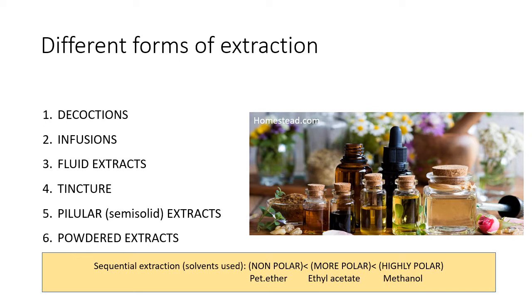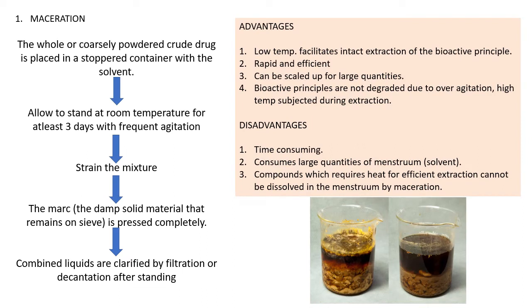The different forms of extracts include decoctions, infusions, fluid extracts, tinctures, peculiar extracts such as solid and semi-solid extracts, and powder extracts. For sequential extraction using a combination of solvents, you start with a non-polar solvent like petroleum ether, then a more polar solvent like ethyl acetate, and finally a highly polar solvent like methanol — progressively increasing the polarity.